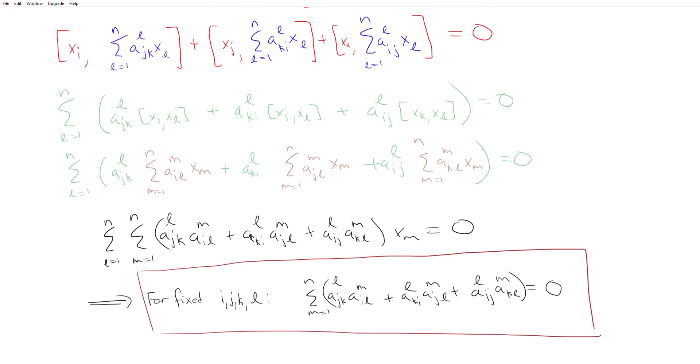what we see is that the coefficient of any basis vector will be this big sum right here. And so we want that sum to be zero if you want the entire vector to be zero. And so that's where we get this last relation.